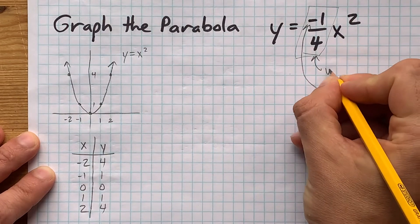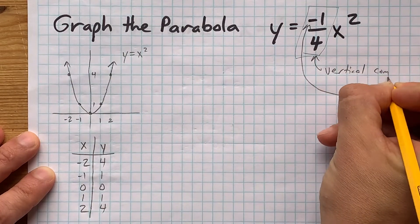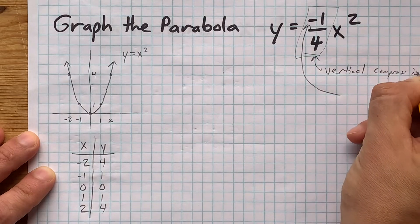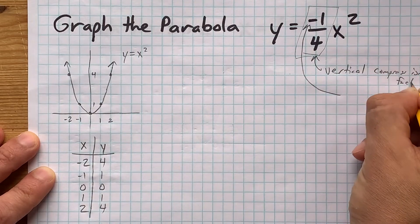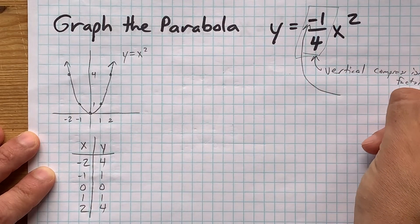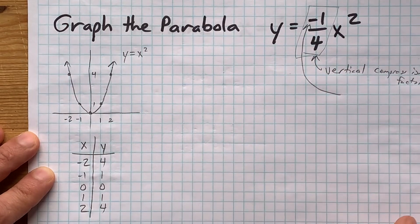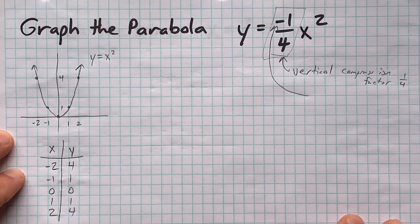The one-quarter is a vertical compression by a factor of one-quarter. That makes the entire parabola only one-quarter as tall as it had been. There we go, now you can see it.